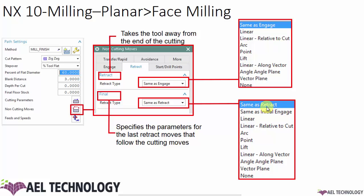We will go to retract. If you want to define the values of retract, you go to non-cutting moves, go to retract, and expand retract. You can see two options: one is called retract and the other is final. The difference is that retract covers tool movement between every cutting line, while in final, there won't be any other cutting operation after the final retract.